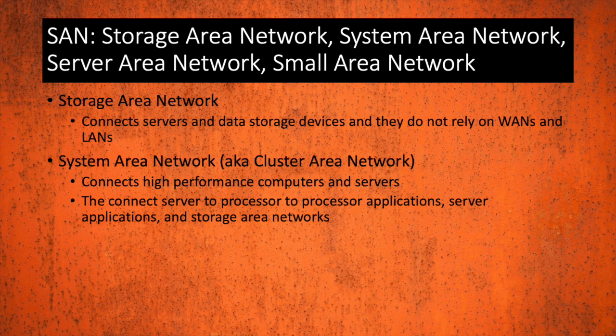These next two can be a bit confusing, so we won't cover them much since the meaning varies by where you work and what your job duties are. A SAN is either a storage area network, system area network, server area network, or sometimes a small area network. The storage area network connects servers and data storage devices and does not rely on WANs and LANs. System area network, also referred to as a cluster area network, connects high-performance computers and servers in a cluster configuration — this can include server-to-server applications, storage area networks, and even processor-to-processor applications.